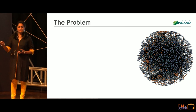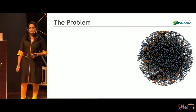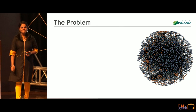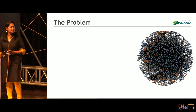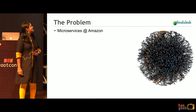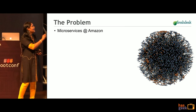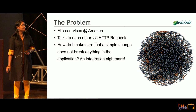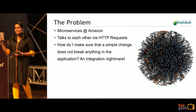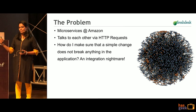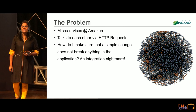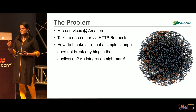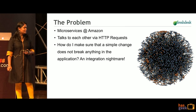Before we start, can anyone guess what this means or has anyone seen this earlier? This is called the Death Star. It's actually the internal architecture of the microservices in Amazon. In such a complex system, there arises one problem: each team actually owns their own microservice and they keep making changes, and there could be other services which would consume this service. So how do I ensure that any change I make to my system does not actually affect the consumers?